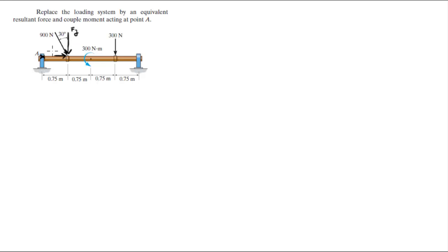let's call this F. F is equal to 900 times the cosine of 30 going down so it's negative, and it comes out to be minus 779 in the J direction.